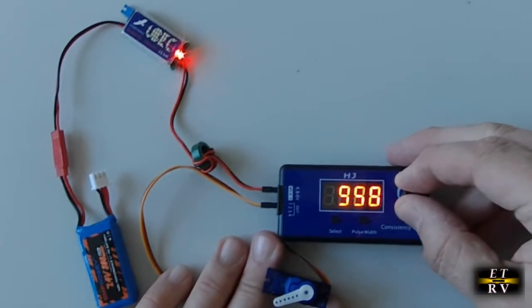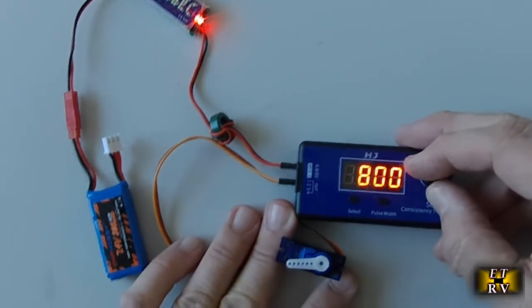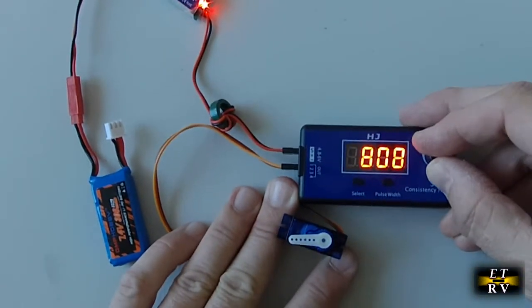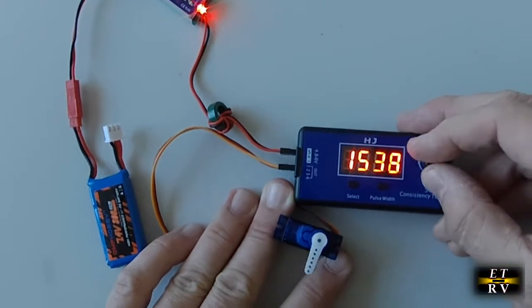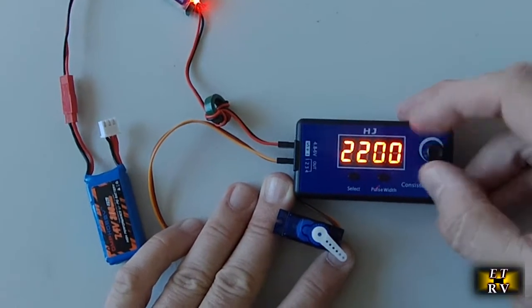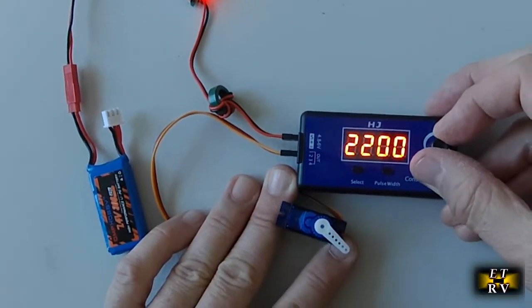So this puts out between 800 and 2200 microsecond pulses, which is pretty much the range of servos, as I understand it.